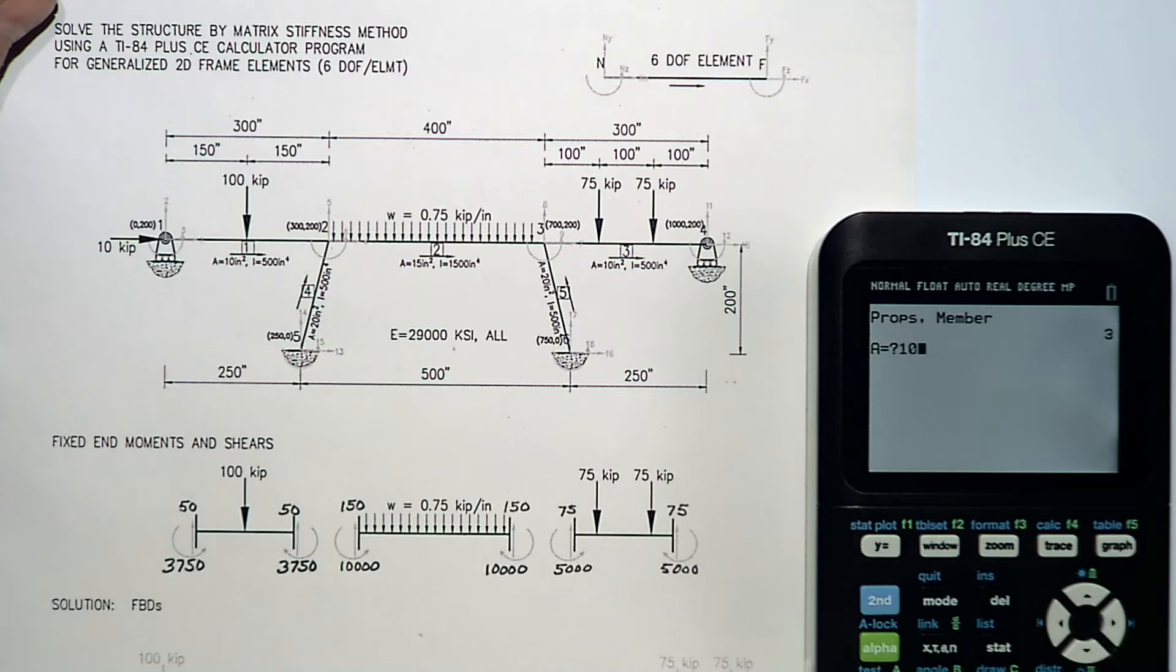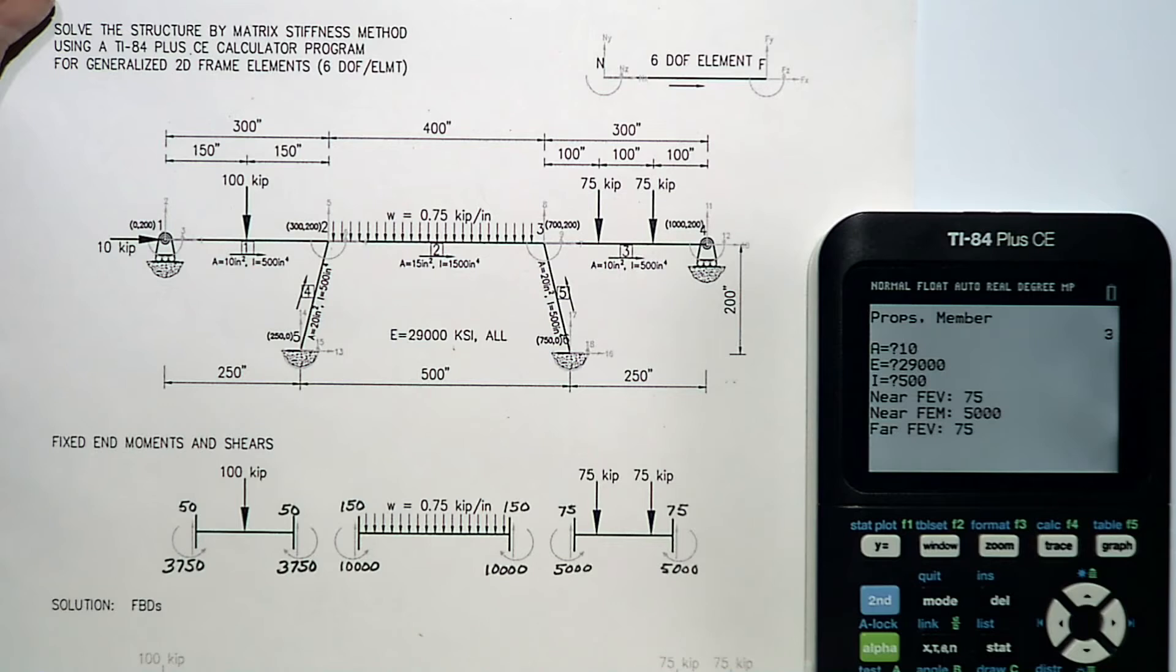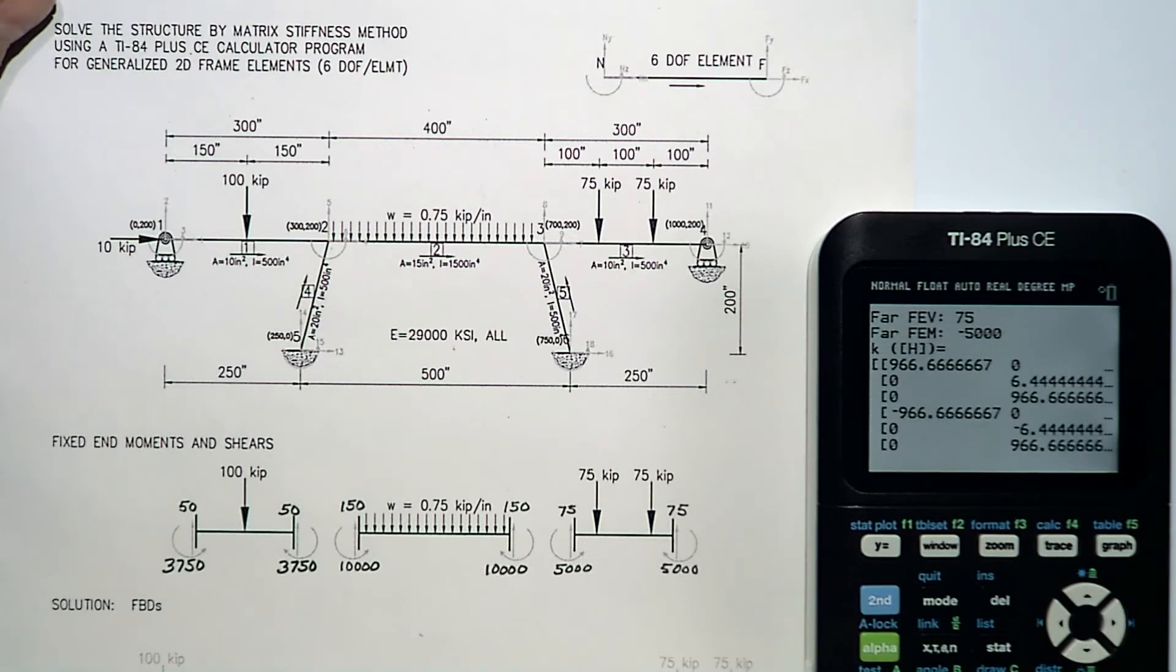Member three has an area of ten. Twenty-nine thousand is my modulus. Five hundred is my moment of inertia. Fixed end shear is seventy-five. Fixed end moment, five thousand. Fixed end shear, seventy-five on the far end. And negative five thousand as my fixed end moment at the far end for member three. Member stiffness matrix.